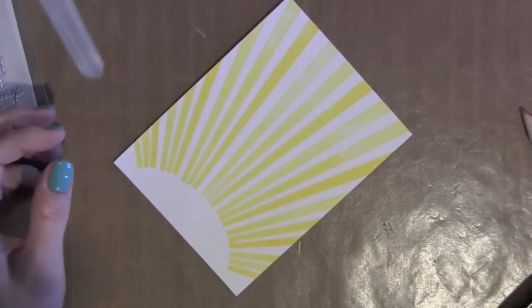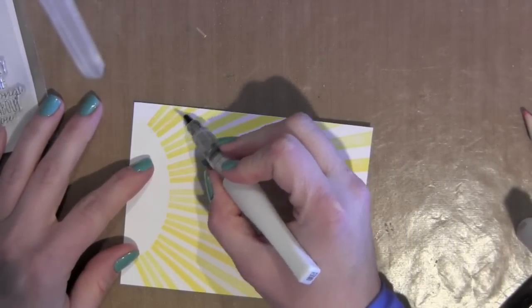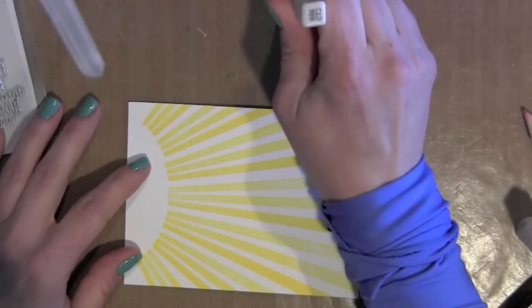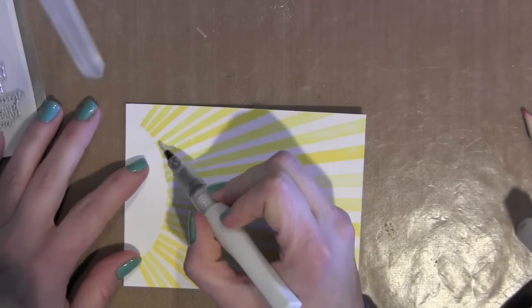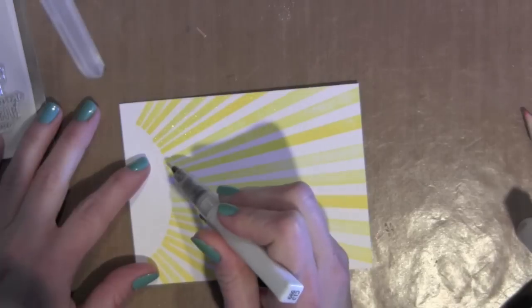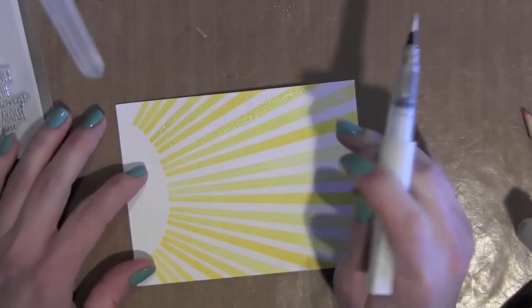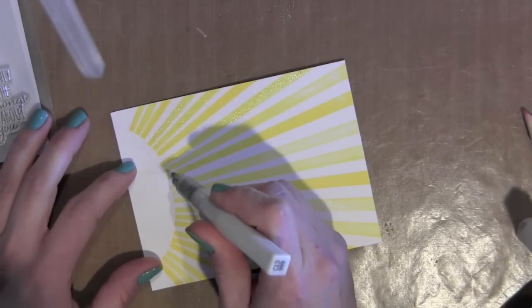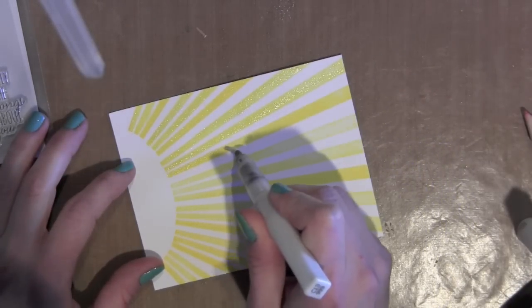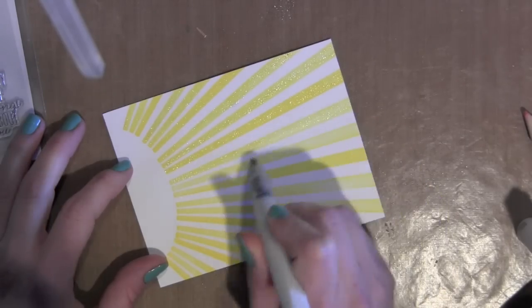Next I'm going to take the Wink of Stella Clear Glitter Brush Tip Marker and I am just going to color over each of the sun rays to give them a little bit of sparkle. My glitter liquid wasn't coming out very good so I just pounced it on my craft sheet there to get the fluid flowing again. Just keep tracing over all of these until I have all of those with some nice sparkle. I think it just really adds to the sunshine feel of the card.